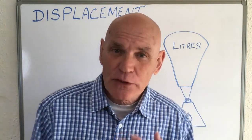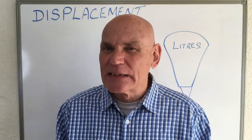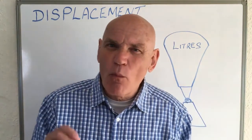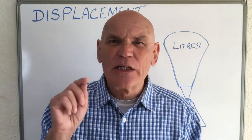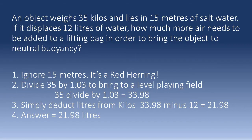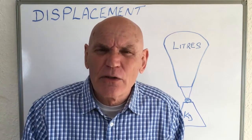Let's practice with a typical question in seawater - which, as you've guessed, is the same as the tug-of-war on a slope. Here we go: an object weighs 35 kilos and lies in 15 meters of salt water; it displaces 12 liters of water - how much more air needs to be added to bring the object to neutral buoyancy? Step one: ignore the 15 meters - it's a red herring. Step two: divide 35 by 1.03, which equals 33.98. Now proceed as if it's on a level playing field - 33.98 minus 12 equals 21.98 liters. That's your answer.